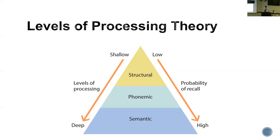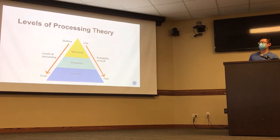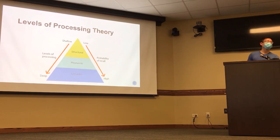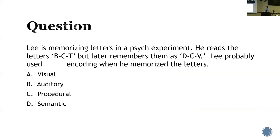This is what the levels of processing theory looks like. It goes from shallow to deep, with low to high probability of recall. We have structural, phonemic, and semantic levels. People are more likely to remember if it's meaningful to them — that's why semantic is in the deeper processing, and you're more likely to recall it if it's meaningful to you.